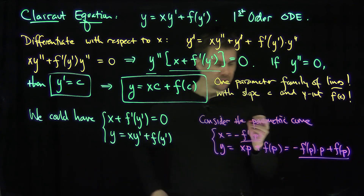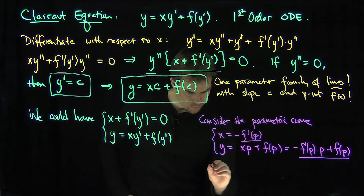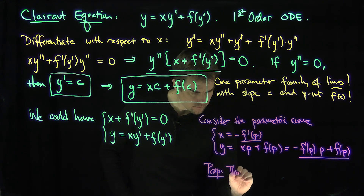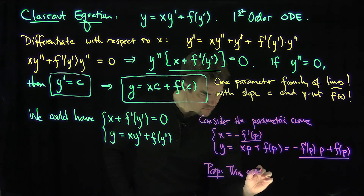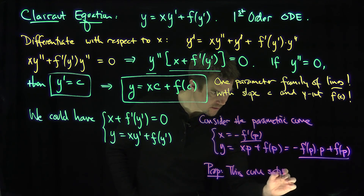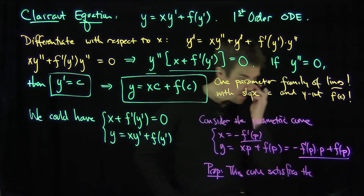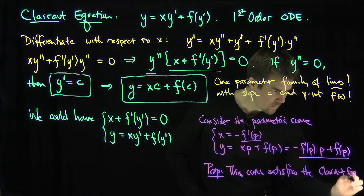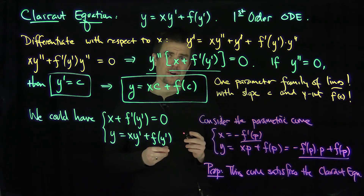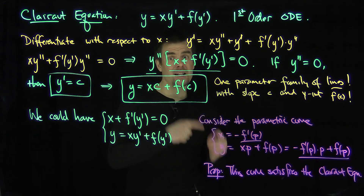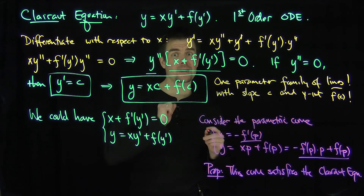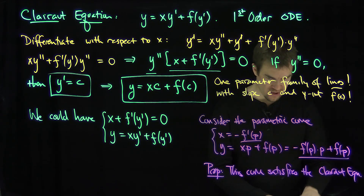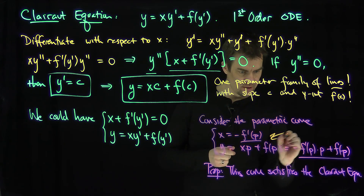This parametric curve is also a solution to the differential equation — it satisfies the Clairaut equation. Moreover, this parametric curve is not an element of the one-parameter family of lines, so it is a singular solution. This curve is what's referred to as a singular solution.